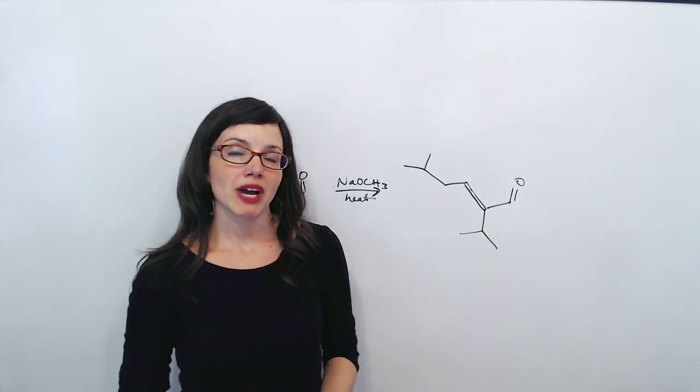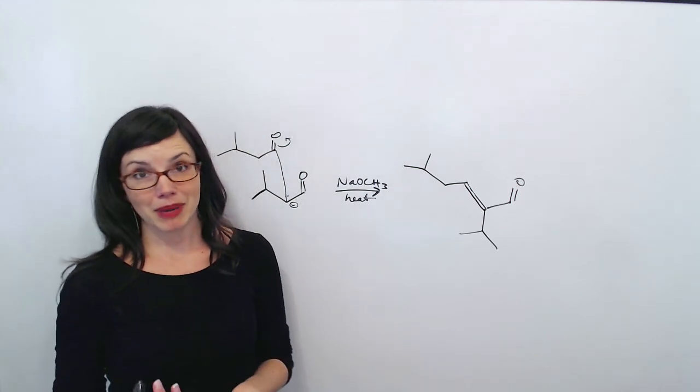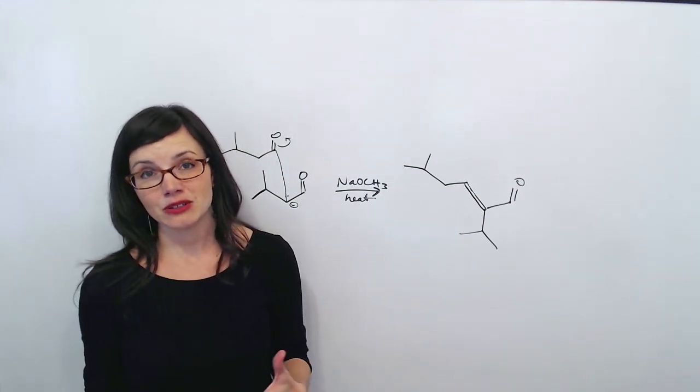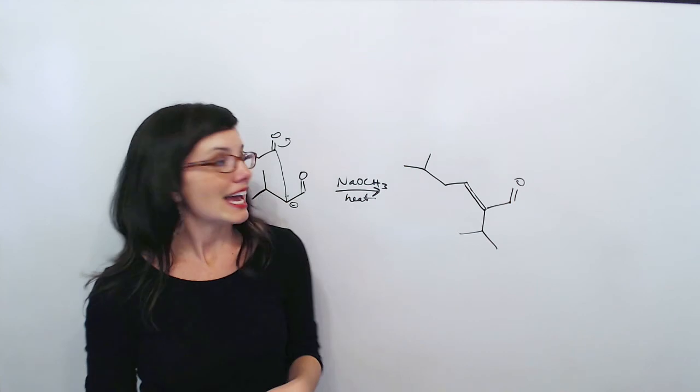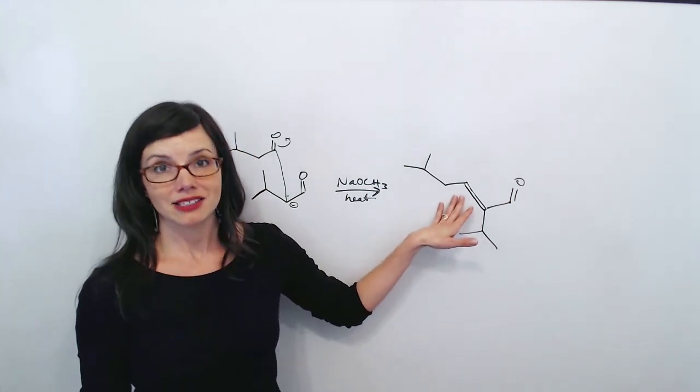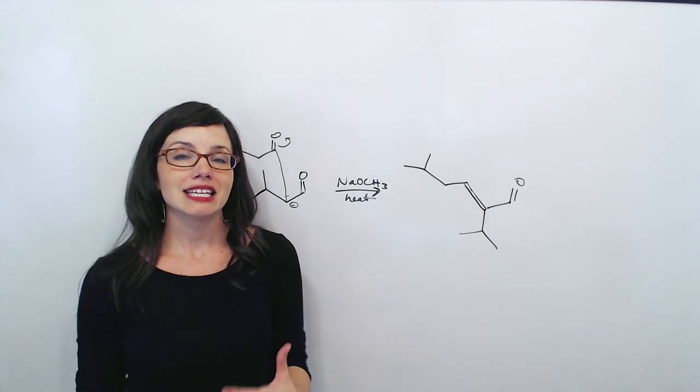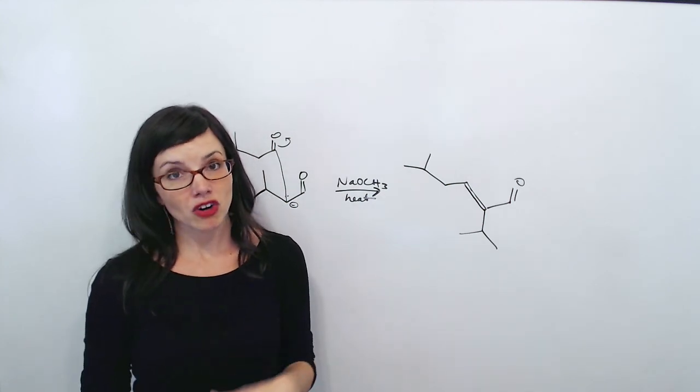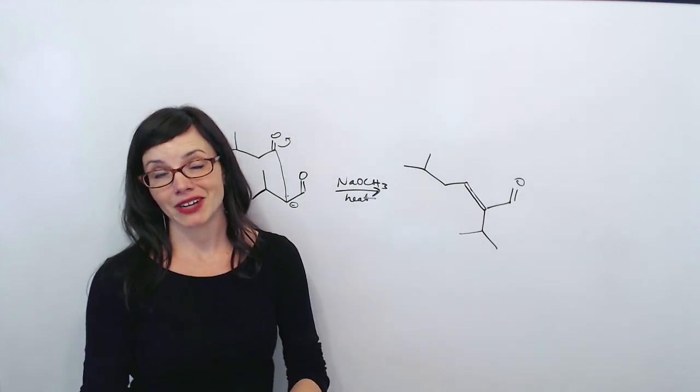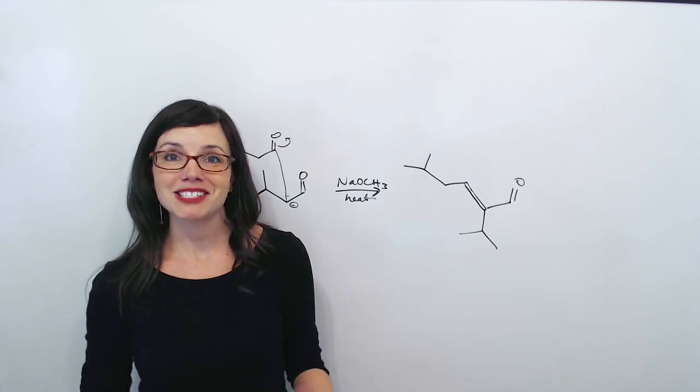You're going to get a lot more practice on both the beta-hydroxy aldehydes and ketones, the addition products, and also these alpha-beta-unsaturated aldehydes and ketones, the condensation products, in the next two videos when you learn about crossed aldols and intramolecular aldols. So if you want some more practice, just keep watching.